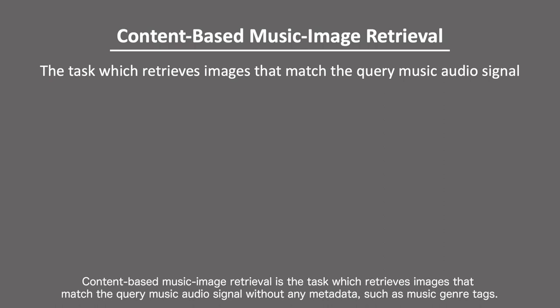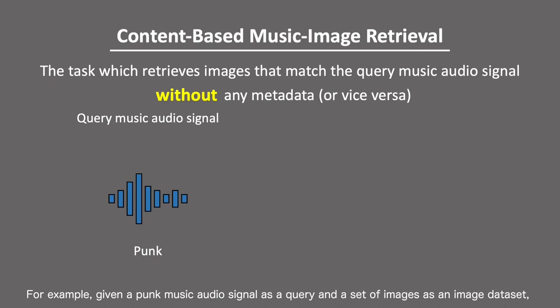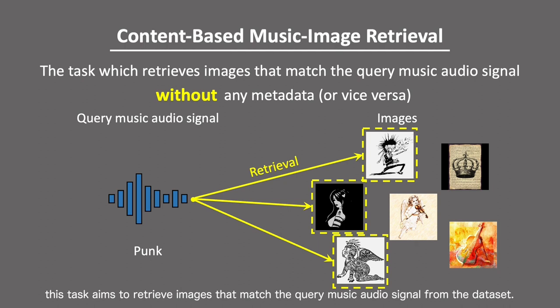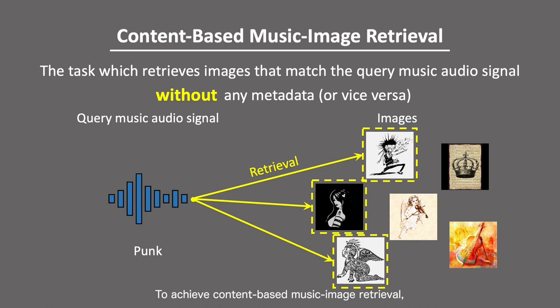Content-Based Music Image Retrieval is a task which retrieves images that match a query music audio signal without any metadata, such as music genre tags. For example, given a input music audio signal as a query and a set of images as an image dataset, this task aims to retrieve images that match the query music audio signal from the dataset.